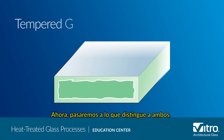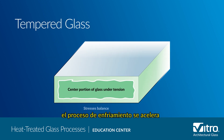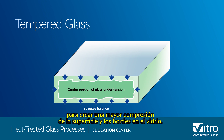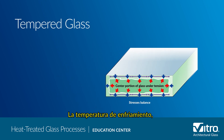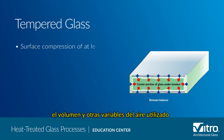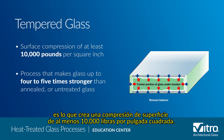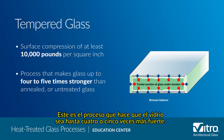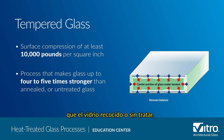Now we'll move on to what distinguishes the two. With tempered glass, the cooling process is accelerated to create higher surface and edge compression in the glass. It is the air quench temperature, volume, and other variables that creates a surface compression of at least 10,000 pounds per square inch — making glass up to four to five times stronger than annealed or untreated glass.